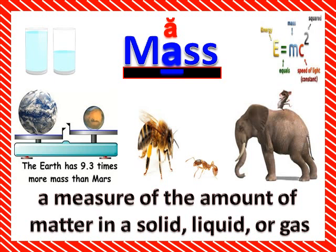Like you see on the left here, the earth — the mass of the earth is bigger than the mass of Mars. And in the middle, you see the mass of the bee is bigger than the mass of the ant. And the mass of the elephant is bigger than the mass of the rat on its back. And then in liquid, you see that full glass of water up top — the mass of that full glass of water is bigger than the mass of the half glass of water. Mass is a measurement of the amount of matter in a solid, liquid, or gas.